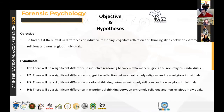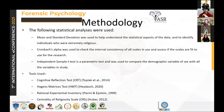These were my hypotheses: to find out if there exists a difference in inductive reasoning, cognitive reflection, and thinking styles between extremely religious individuals — extremists — and non-religious individuals. The four hypotheses are that there is a significant difference in inductive reasoning, cognitive reflection, rational thinking, and experiential thinking between these two groups.